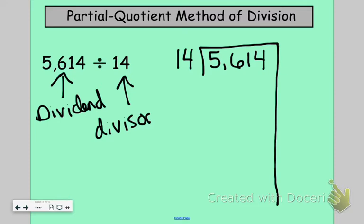Next thing we're going to do is take friendly numbers or multiples that maybe we know of 14 and subtract them out. So right away I'm thinking, okay, I could do 14 times 10 and that would give me 140, but that almost seems too small considering I have 5,614.